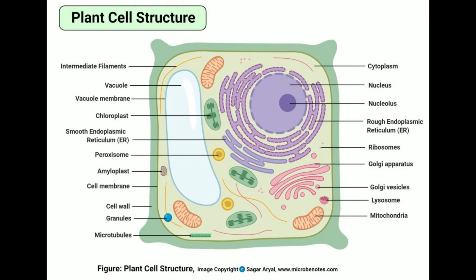Prokaryotes Definition: Prokaryotes are single-celled entities that are primitive in structure and function, as they lack a membrane-bound nucleus and other organelles. The term prokaryote is derived from two Greek words: pro, meaning 'before,' and karyon, meaning 'nucleus.' Prokaryotes are considered to be the first living organisms on Earth, as they are the simplest form of life.